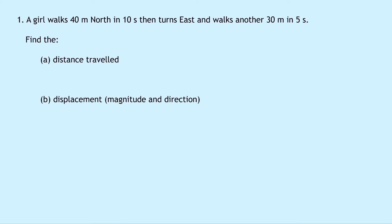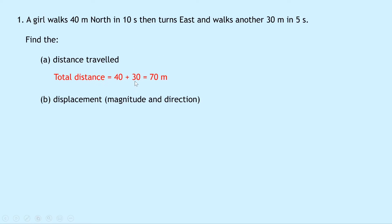Question one says that Aguirre walks 40 metres north in 10 seconds, then turns east and walks another 30 metres in 5 seconds. Find the distance travelled in part A. To find the distance travelled it's quite simple — all we need to do is look at our two distances in the question, 40 metres and 30 metres, and add them together. So our total distance is 40 plus 30, which is 70 metres.